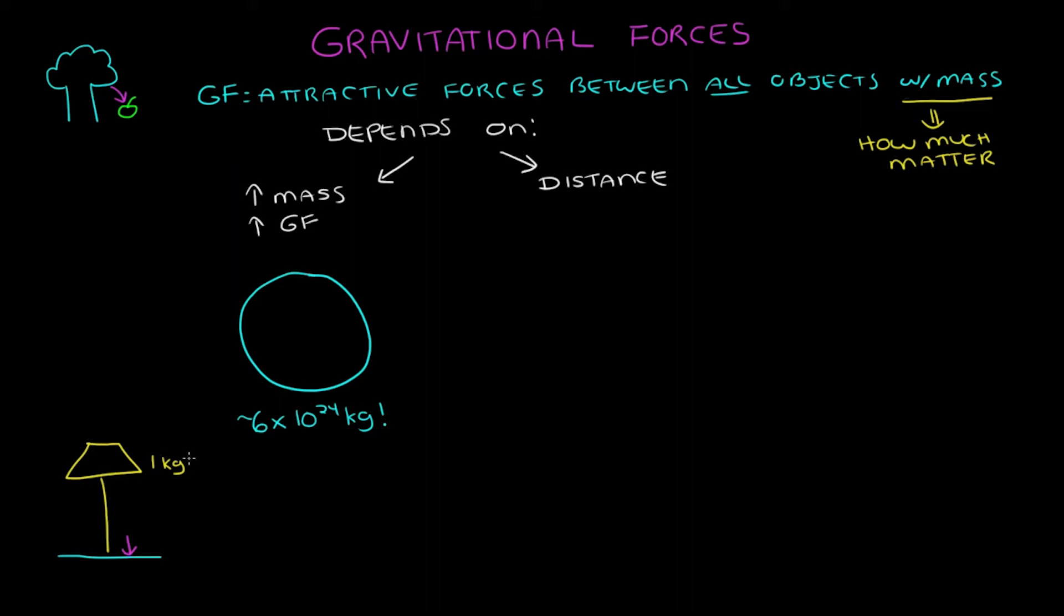But we said the mass of the object is just one factor affecting the strength of its gravitational force. The other is the distance between objects. The more distance between the objects, the weaker the gravitational pull between them. For small objects without much mass, it doesn't take much distance for their gravitational forces between each other to be so weak that we don't notice them.